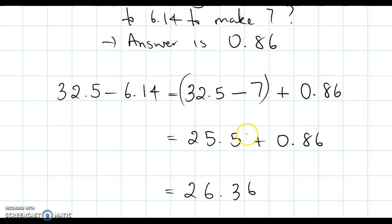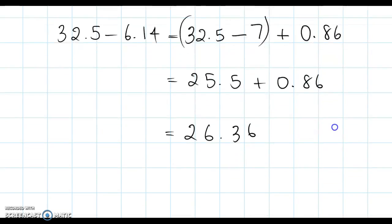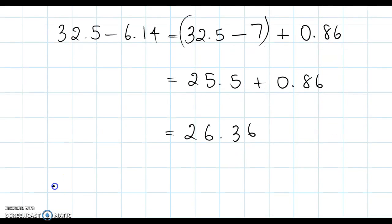Okay. The 100th column, nothing, nothing plus 6, that's 6. The 10th column, 5 plus 8, 13 is my 3. Carry the 1. 25 plus 1. 25 plus 0 is 25 plus 1 is 26. Therefore, 32.5 take away 6.14 equals 26.36.